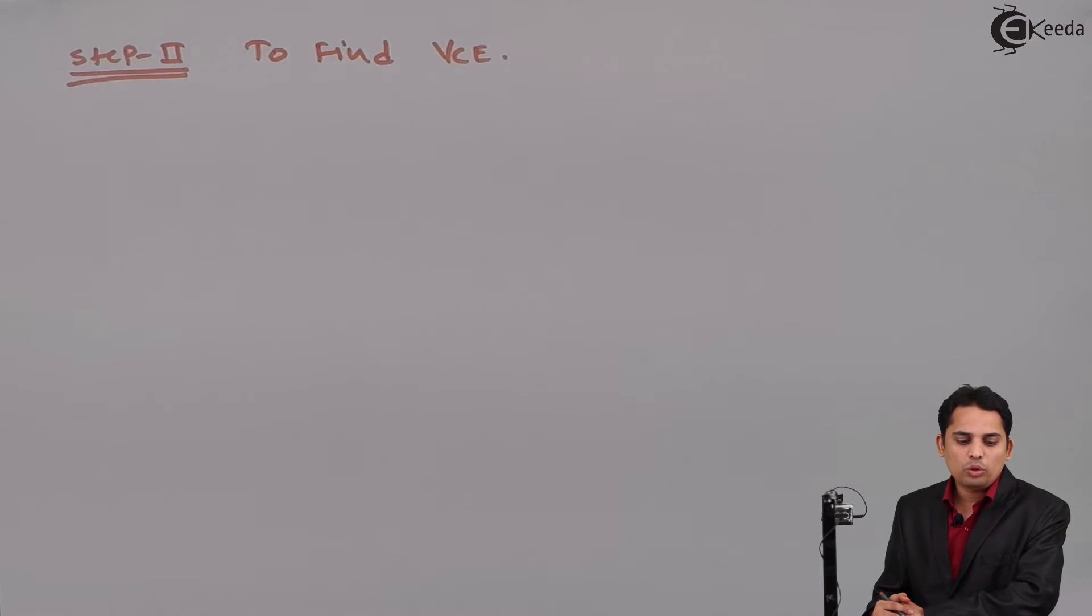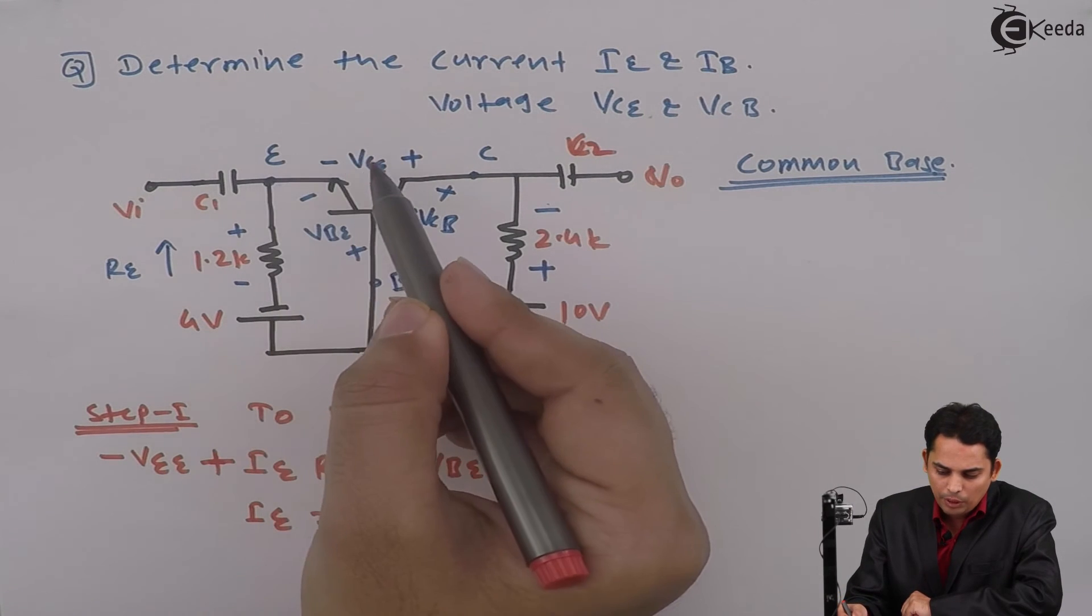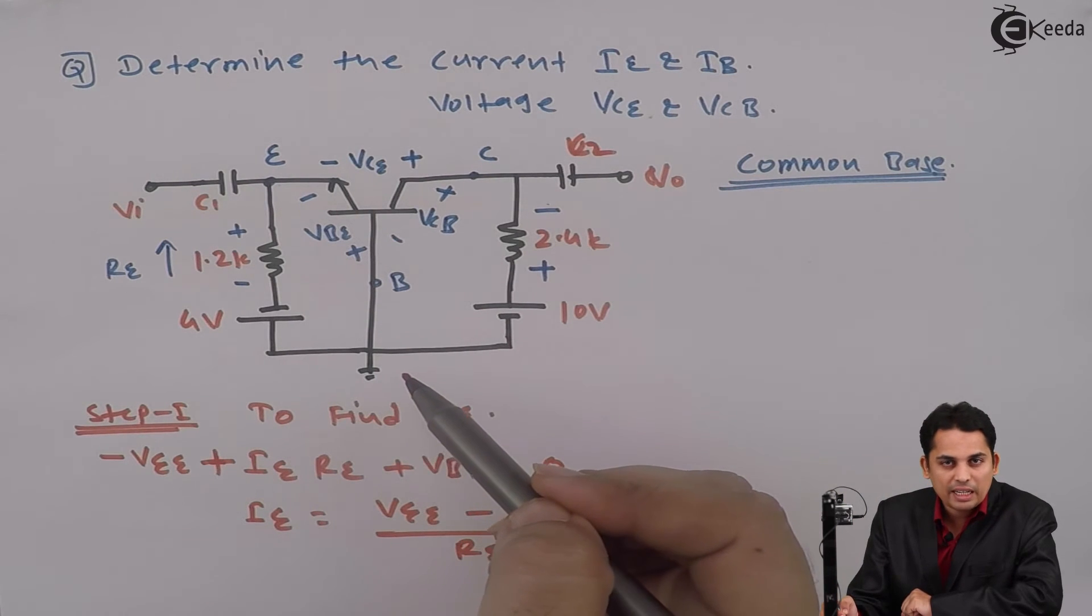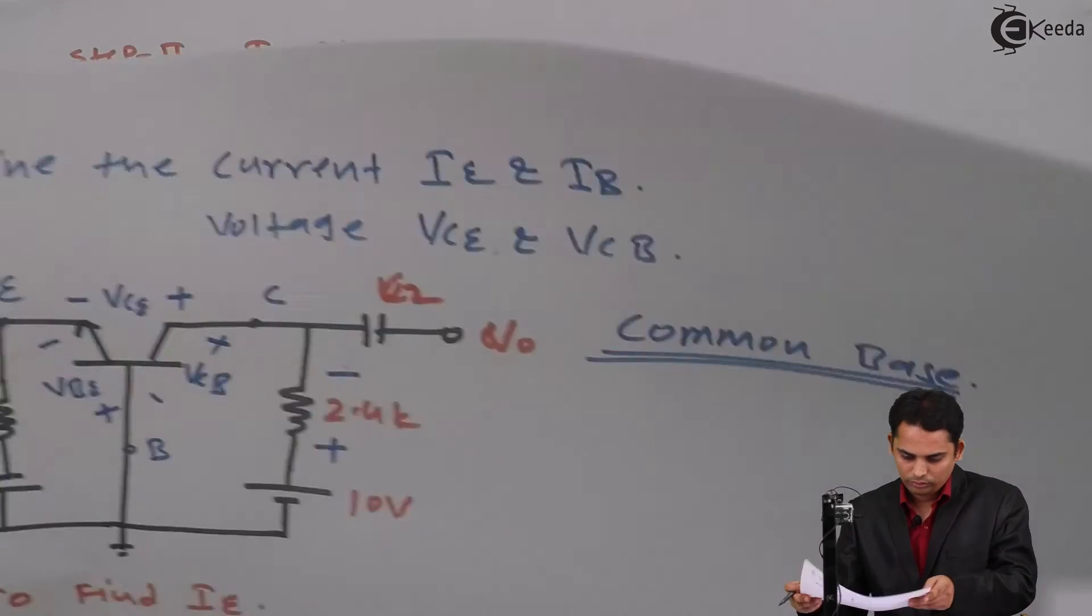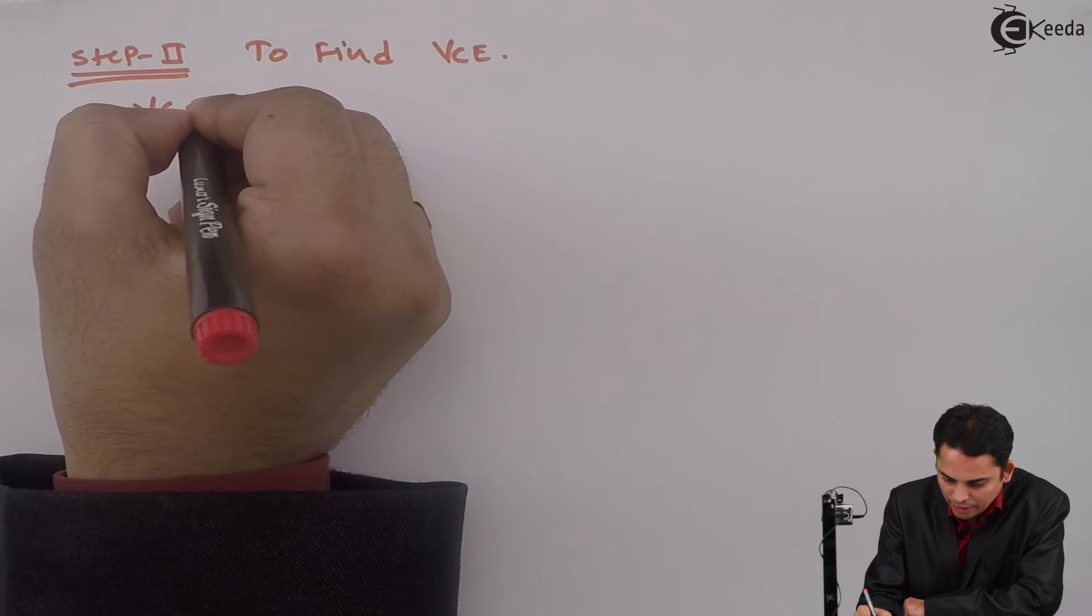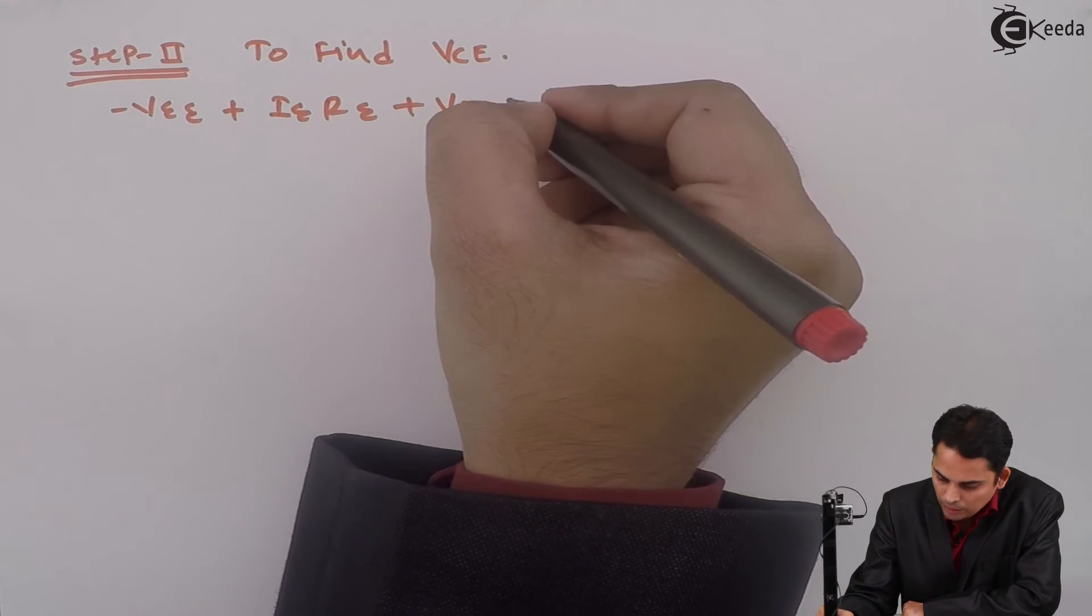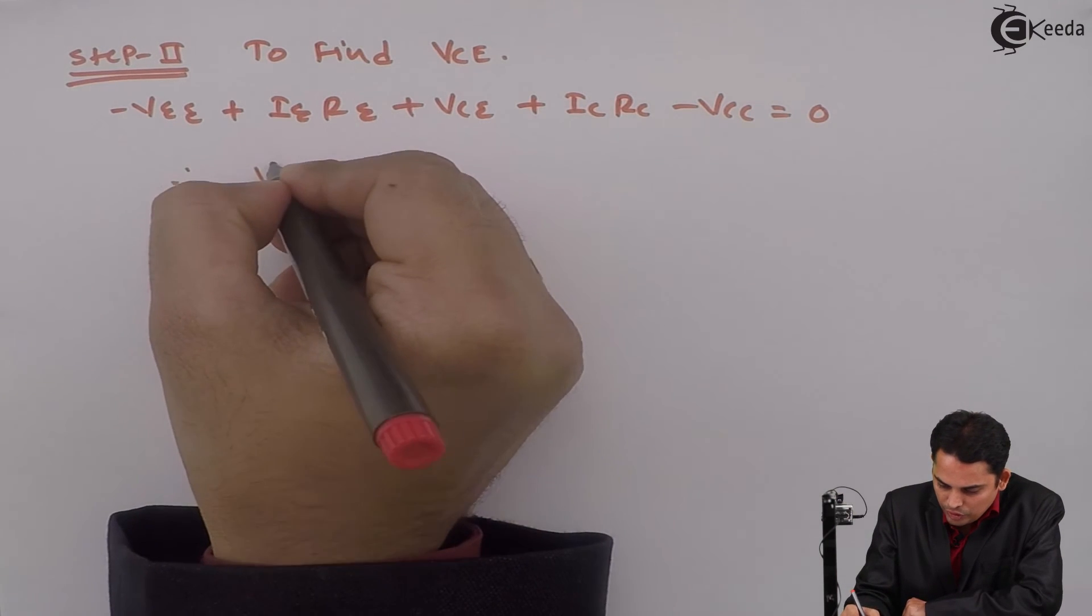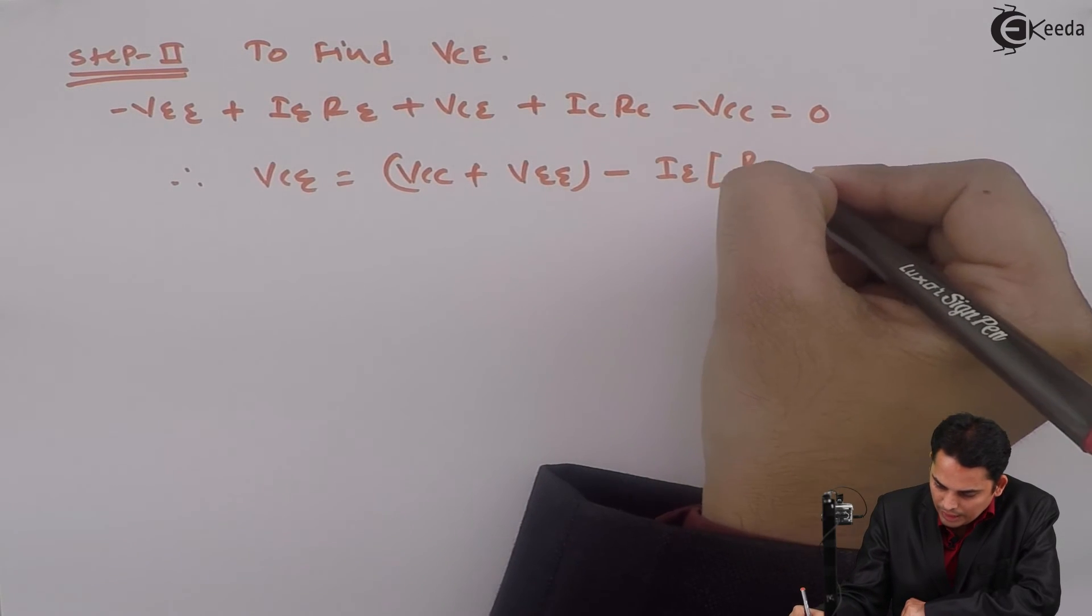In common base configuration, in order to find out VCE, we need to apply KVL to the entire loop. We will start from this point. We will go from minus VEE plus IE into RE plus VCE plus IC into RC minus VCC is equal to 0. This is how we can calculate VCE in common base configuration. Hence, VCE is equal to VCC plus VEE minus IE into bracket RC plus RE.